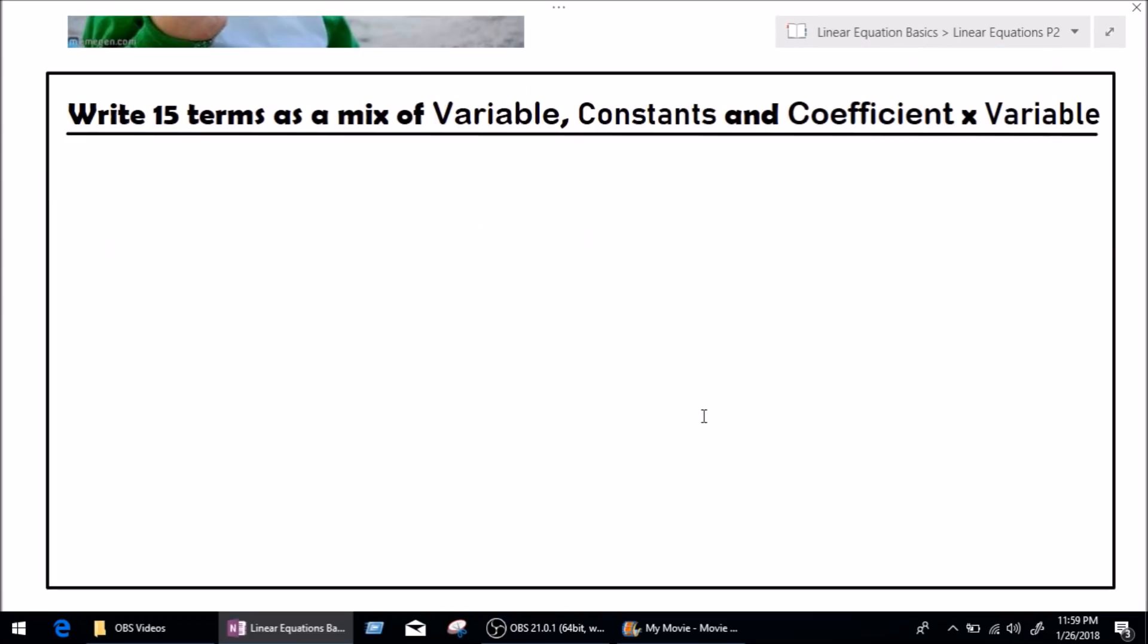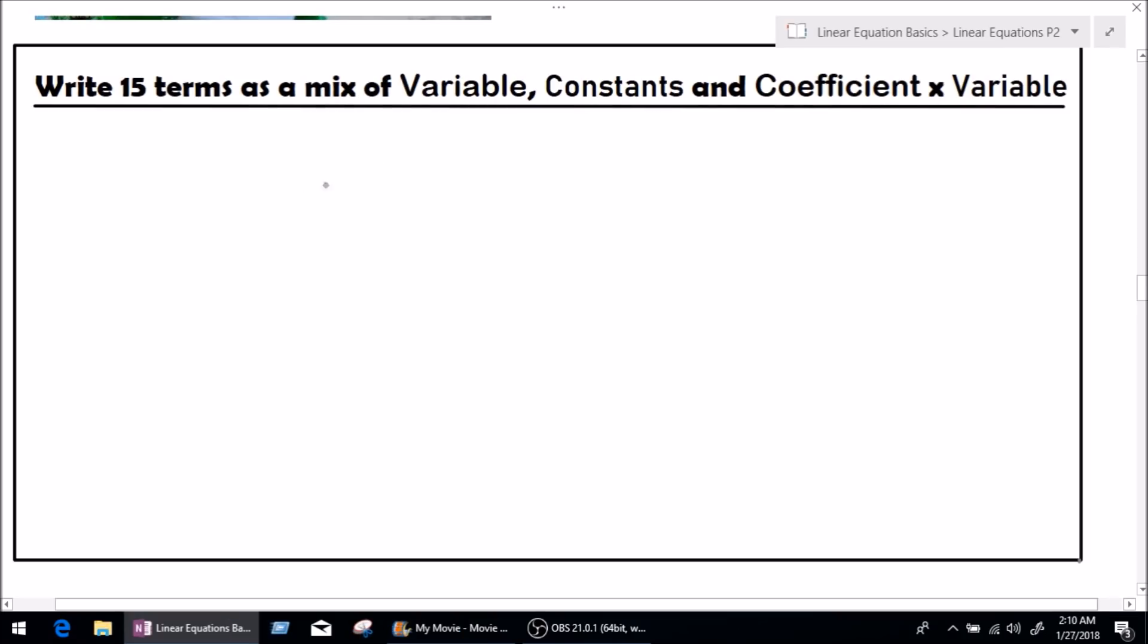So, now we know what is a term. Let's move on and write 15 terms as a mix of variable, constant and coefficient multiplied by variable together. So, the first term I'm going to write is 2x.